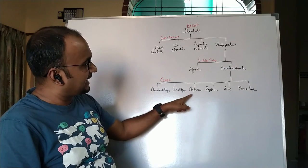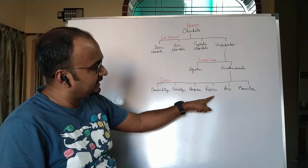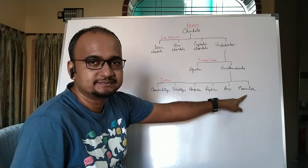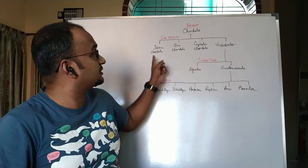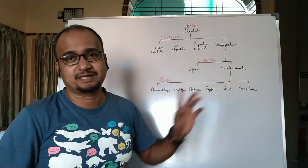Chondrichthyes, Osteichthyes, Amphibia, Reptilia, Aves, and Mammalia. Today in this class I'll discuss the four sub phyla and two superclasses.